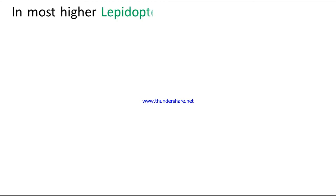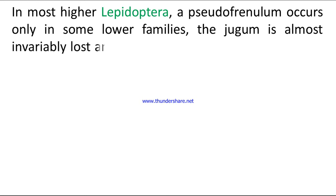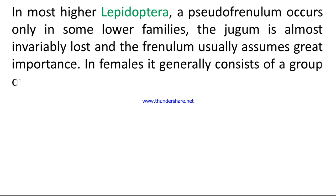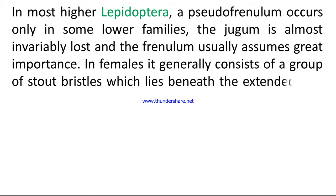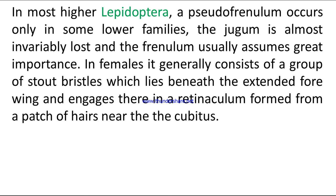In most higher Lepidoptera, a pseudofrenulum occurs only in some lower families. The jugum is almost invariably lost and the frenulum usually assumes great importance. In females, it generally consists of a group of stout bristles which lie beneath the extended fore wing and engage therein a retinaculum formed from a patch of hairs near the cubitus.